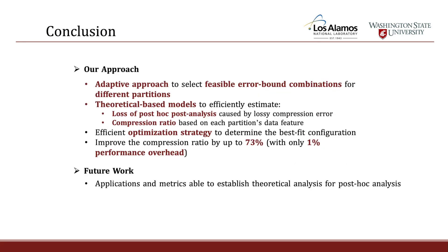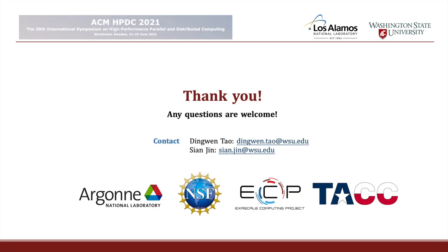In conclusion, our approach adaptively selects feasible error-bound combinations for different partitions, provides theoretically-based models for post-hoc analysis quality and compression ratio, and builds an efficient optimization strategy to determine the best-fit configurations. Our approach improves the compression ratio by up to 73% with only 1% performance overhead. Future work includes finding more applications and metrics to build theoretical analyses for additional post-hoc analyses. That's all for this presentation — thank you.